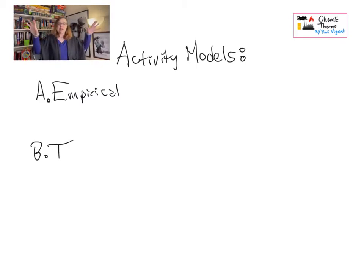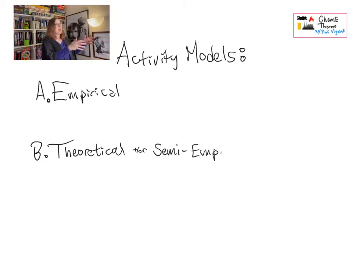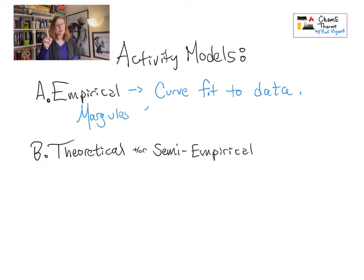The two biggest categories are empirical and theoretical. Empirical is what empirical is all the time. We go get some data, we run a curve through that data, and then we write an equation for that curve, and there's your model. It doesn't give you a lot of insight into how the molecules behave, but it is really accurate.